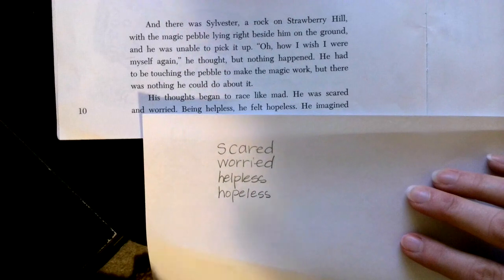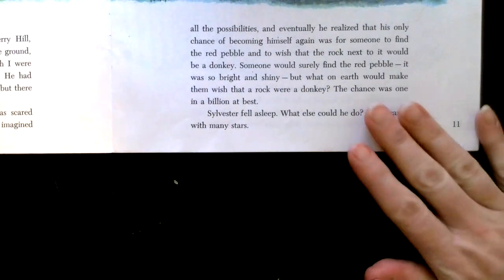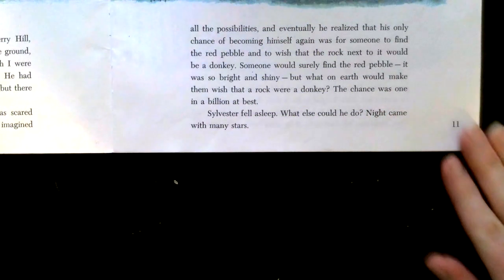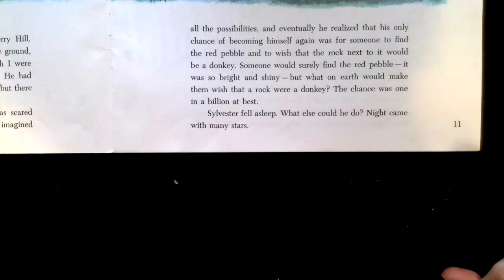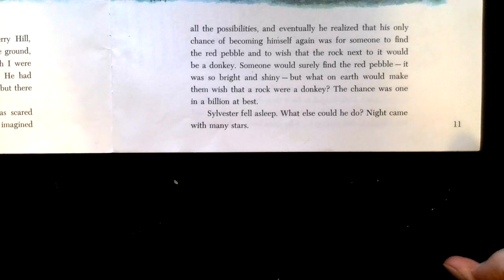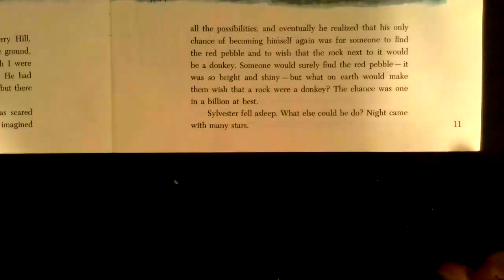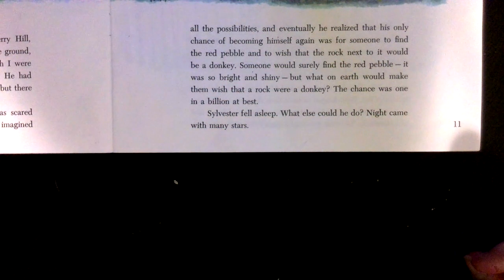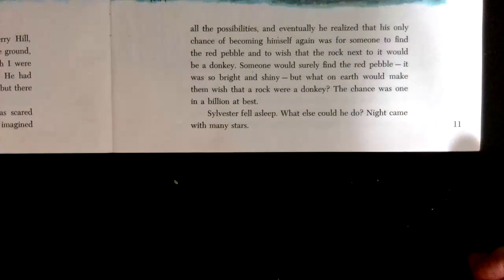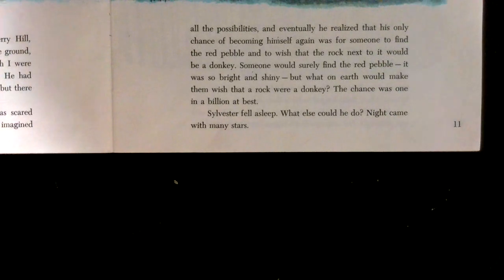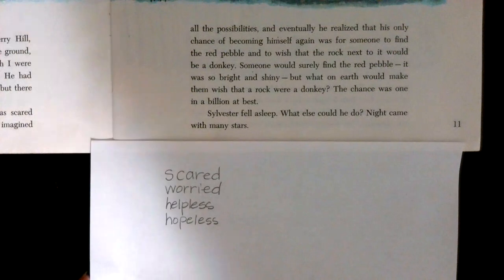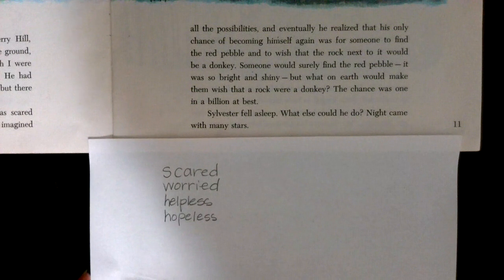Those are some really good emotions that William Steig has there. He imagined all the possibilities and eventually realized that his only chance of becoming himself again was for someone to find the red pebble and wish that the rock next to it would be a donkey. Someone would surely find the red pebble — it was so bright and shiny. But what on earth would make them wish that a rock were a donkey? The chance was one in a billion at best. Sylvester fell asleep — what else could he do? So he's feeling really helpless and hopeless and feels like there's only a chance in a million. Now move on to part two.